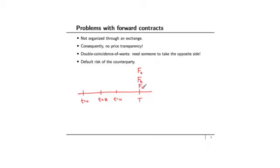Because there is no price transparency and these contracts are not organized through an exchange, there is something called double coincidence of wants. When you construct these forward contracts, you have to have somebody take the opposite side. In order to find that counterparty, you have to go look for it, and that might lead to problems where certain forward contracts cannot be written because their counterparty is not available. There's also default risk of the counterparty, which we talked about in the context of swaps. If you take on a forward contract with a counterparty and the counterparty is not willing to make the payments when the time comes or is bankrupt, then you expose yourself to unnecessary risk.